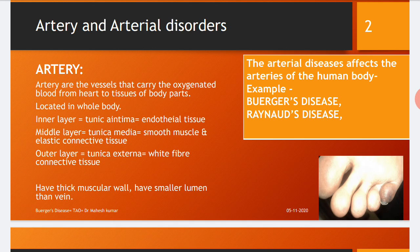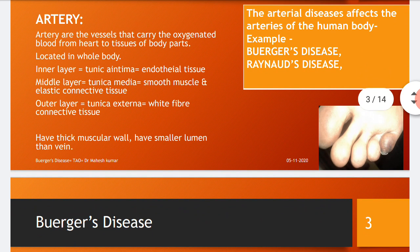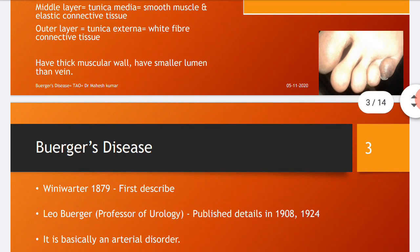Arterial diseases affect the arteries of the human body, and peripheral artery diseases are common. Examples include Buerger's disease, Raynaud's disease, etc. In the figure, you can see a photo of Buerger's disease.